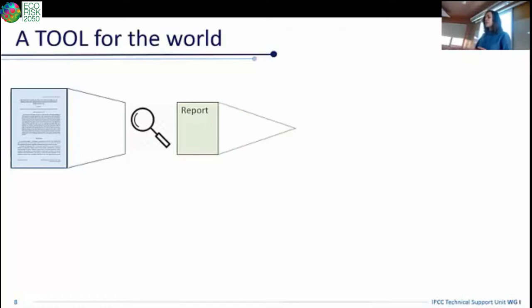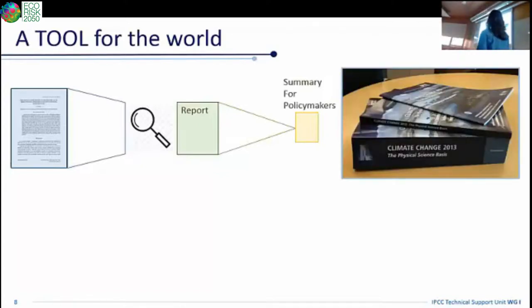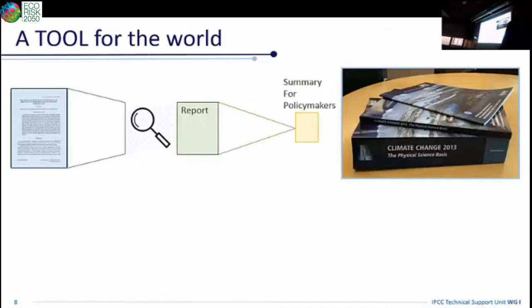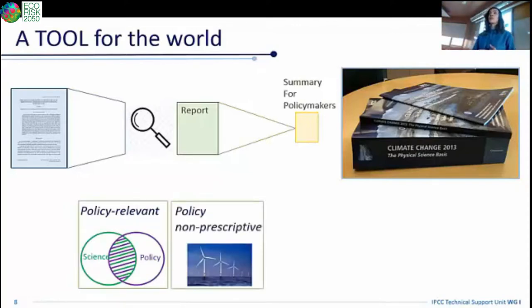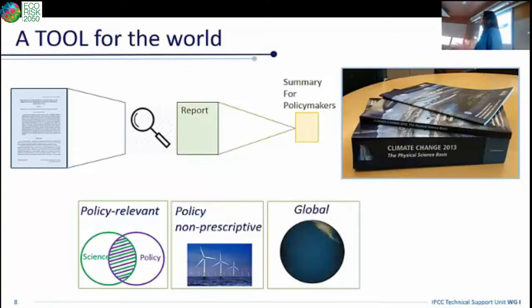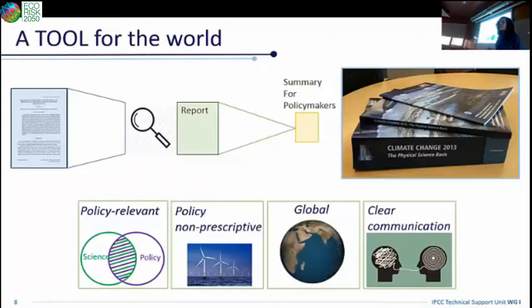From these big reports, they extract the information that is relevant for policymakers. And they compile this in a summary for policymakers, which is only 20 pages. For you to have a bit of context, this is how the big report looks like. And this is how the summary for policymakers is. This is the condensed information that policymakers are interested in for making these decisions. It's complex because they have to be policy relevant when choosing the information. They have to be policy non-prescriptive when they write the summary for policymakers. That means they should not say what you have to eat, how you have to commute to work. It's non-prescriptive. The assessment has to be global. It has to cover the entire world and not one specific region over another. And last but certainly not least, it has to be clearly communicated.